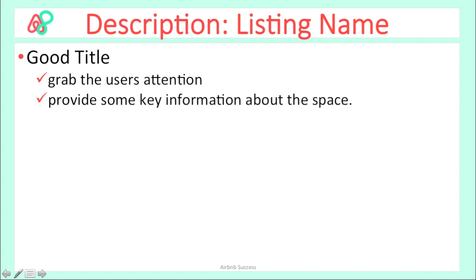Pick your top two to three reasons you think you have a good space and boil them down to one or more words. For example: location, rooftop access, penthouse, private room. Start brainstorming. The listing name is similar to the headline of a blog or publication — it needs to attract a browser to click on the listing and read more.